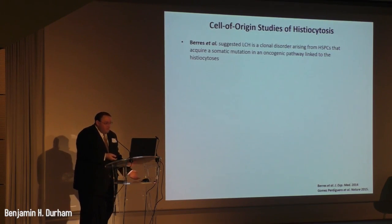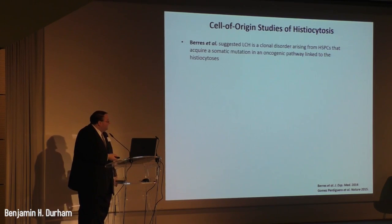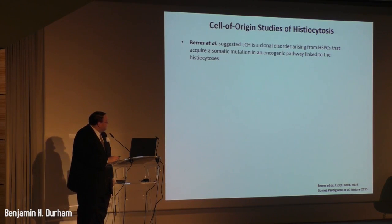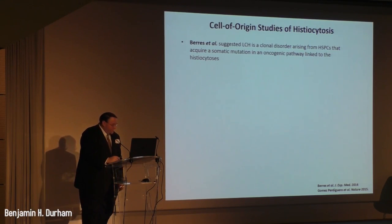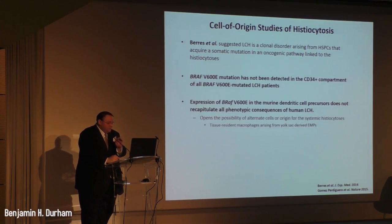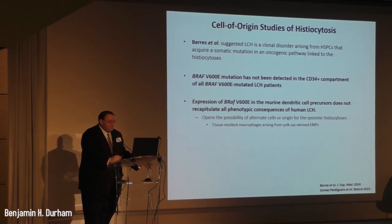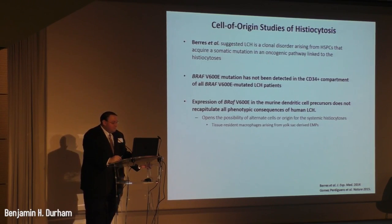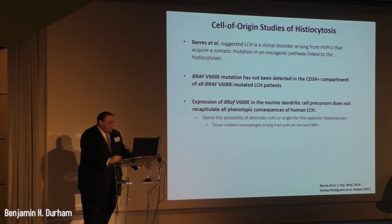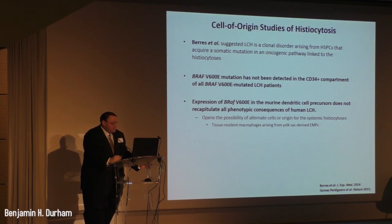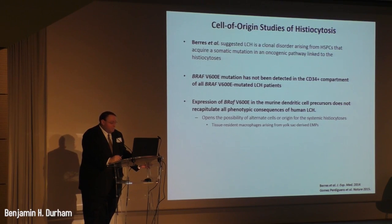A summary of what we've found in the history of the ontogeny and cells of origin of Langerhans cell histiocytoses and Erdheim-Chester disease: evidence suggests LCH is a clonal disorder arising from hematopoietic stem or progenitor cells that acquire somatic mutations in the MAPK oncogenic pathway. However, BRAF V600E mutations were not found in the CD34-positive compartment of all BRAF V600E mutated LCH patients. Also, expression of BRAF V600E in a CD11c-Cre BRAF V600E mouse model did not recapitulate all phenotypic consequences of human LCH, opening the possibility of alternate cells of origin, such as tissue-resident macrophages arising from erythroid myeloid progenitors.